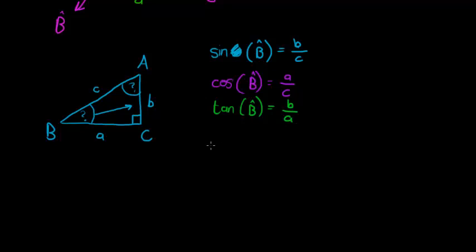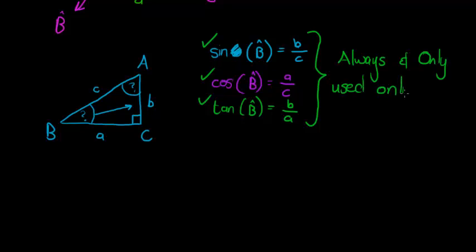I hope that made sense to you, but the most important thing that I want you to get from this is that sine, cos, and tan can only, is always and only, always and only used on right triangles. That's the only time we're allowed to use sine, cos, and tan in this way, which means one of my vertices must be associated with a 90 degree angle. In this case, it's vertex C must be a 90 degree angle. If it's not, then I can't use this. Well I can, but not in this simple way.